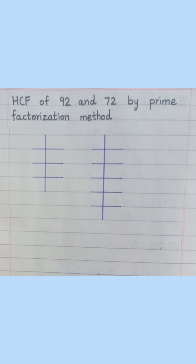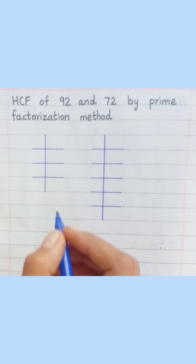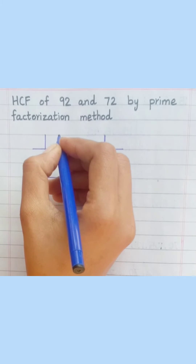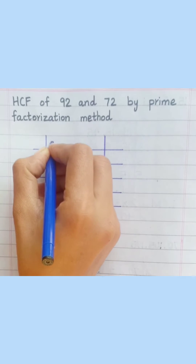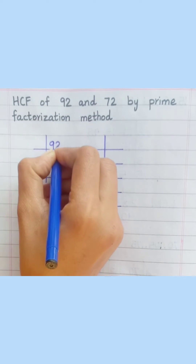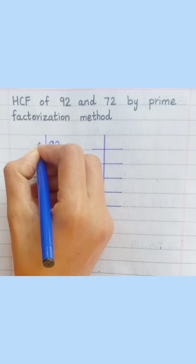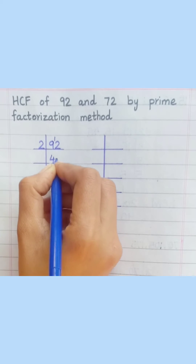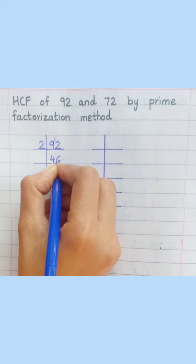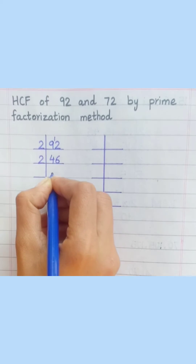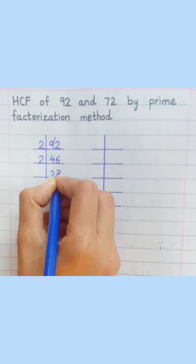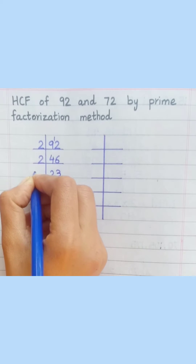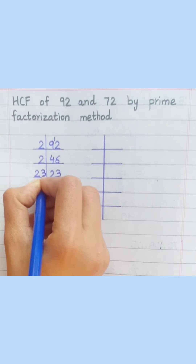HCF of 92 and 72 by prime factorization method. Starting with 92: two fours are eight, two six are twelve, two twos are four, two threes are six, twenty-three ones are twenty-three.